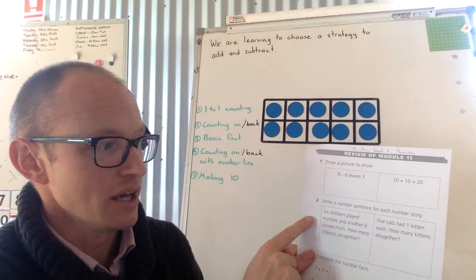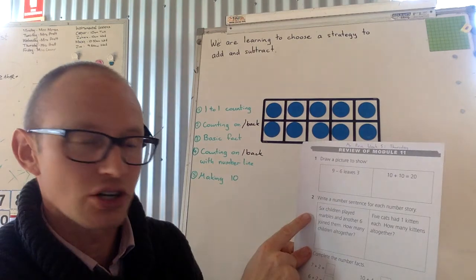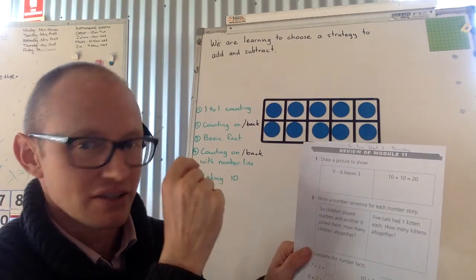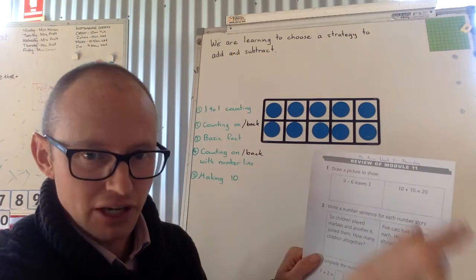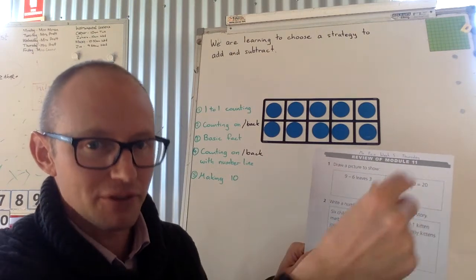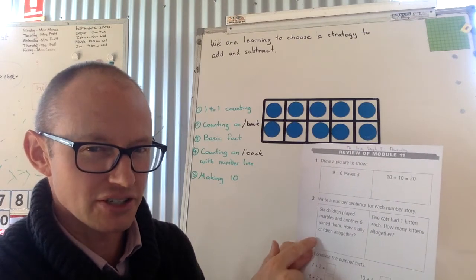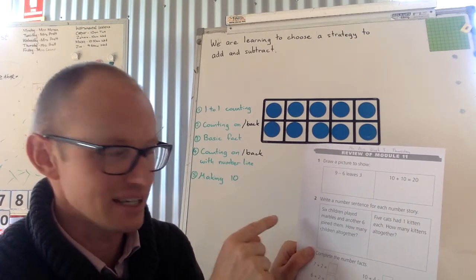Number two. So here you've got a number. It's asking you to write a number sentence. So a number sentence is like the something plus something equals or something take away something equals. So it's giving you the words and it's asking you to think about what is that actually asking.